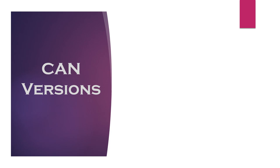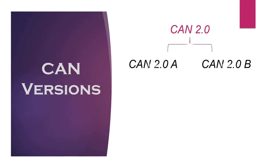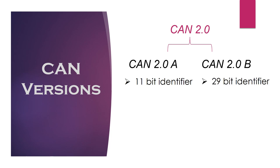Now let's talk about CAN versions. There are several versions of CAN specification, among which the latest is CAN 2.0, which was released in 1991. This specification has two parts: Part A is for the standard format with an 11-bit identifier, and Part B is for the extended format with a 29-bit identifier.